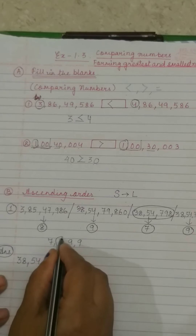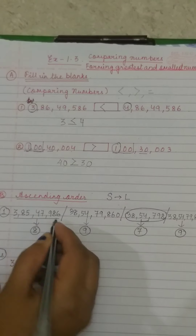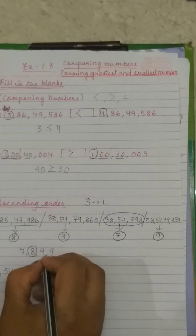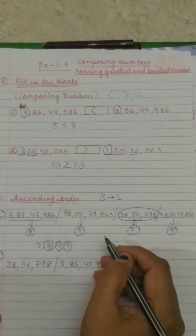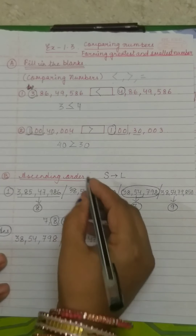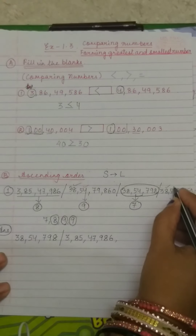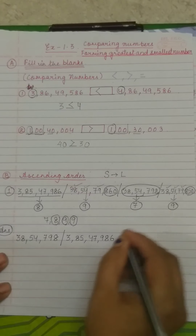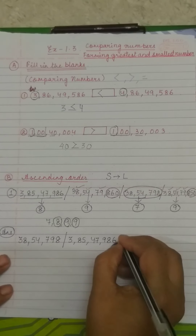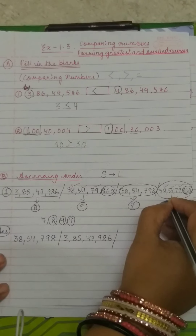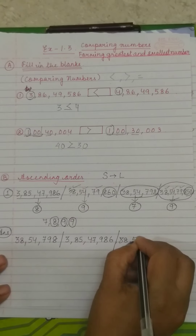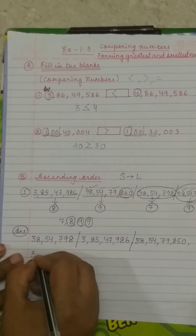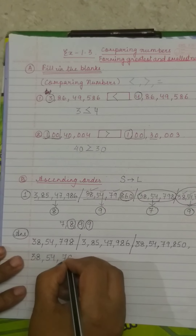Next comes the number with 8 digits: 3 crore 85,47,986. Now both remaining numbers have 9 digits. We compare them from the left side — 38 and 38 in the crores place are the same; 54 and 54 in the lakhs place are the same; 79 and 79 in the thousands place are the same. The only difference is 860 and 850. Since 860 is greater than 850, the next number is 38 crore 54,79,850. The last and greatest number is 38 crore 54,79,860.